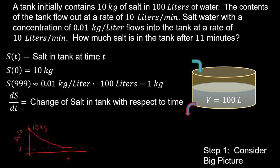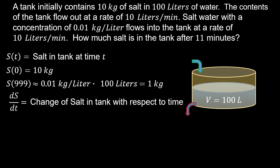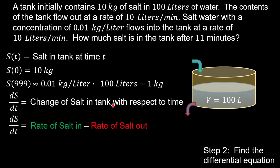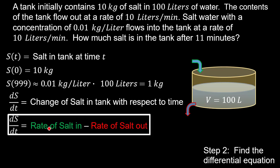Now that we've framed the big picture, the next step is to find the differential equation governing our work. DSDT is the foundation. The key principle is: the change of salt in the tank equals the rate of salt coming in minus the rate of salt going out. We can express these rates as dS_in/dT and dS_out/dT.